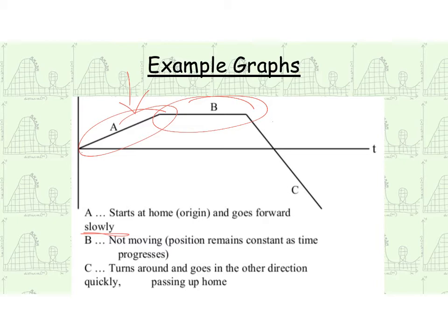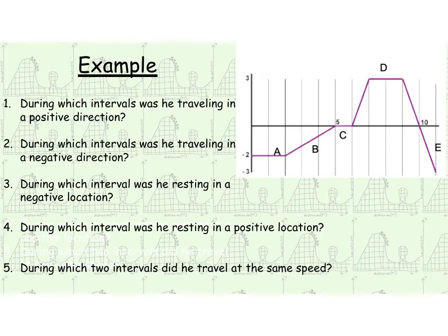All right, now here, we turn around. We go back towards origin, and then we keep progressing past origin, passing where we were. We're also, our slope is greater here than it was for A. So we're moving much more quickly there, too.